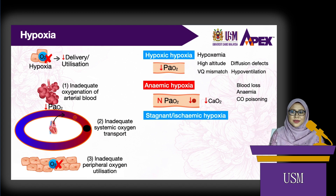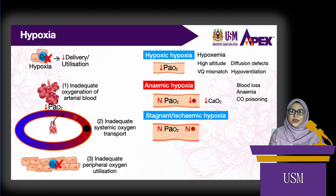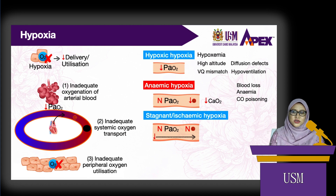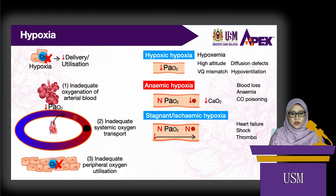Stagnant or ischemic hypoxia, also sometimes known as hypoperfusion hypoxia, is the reduction in blood flow to the tissues. The arterial pressure of oxygen is normal, and total oxygen content is normal, but little of the oxygen in the blood reaches the tissues. This may be caused by heart failure (whole body hypoxia), shock (peripheral hypoxia), or thrombosis (hypoxia in a single organ).